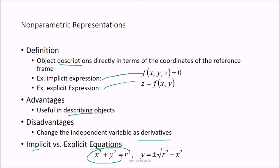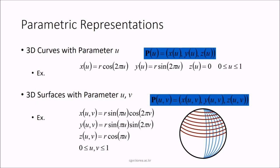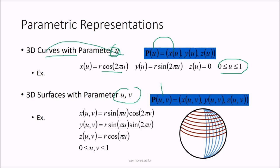Parametric representation uses a parameter u for 3D curves: P(u) = (x(u), y(u), z(u)). For a circle: x(u) = r·cos(2πu), y(u) = r·sin(2πu), z(u) = 0, for u ∈ [0,1]. For 3D surfaces with parameters (u,v): P(u,v) = (x(u,v), y(u,v), z(u,v)), where u ≥ 0 and v ≥ 0. This gives both 3D curve representation and 3D surface representation with parameters.